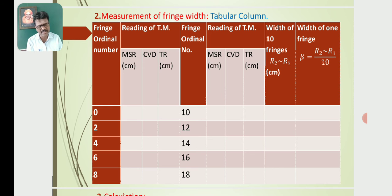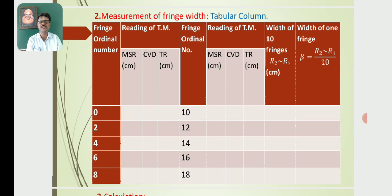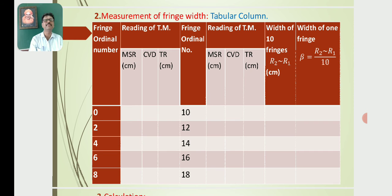In the tabular column, the first column is the fringe ordinal number — usually 0, 2, 4, 6, 8 — as readings are taken for even-numbered fringes. The next columns are the travelling microscope reading: MSR in centimetres, CVD (no unit), and the calculated total reading TR. Again, for fringes 10, 12, 14, 16, and 18, the travelling microscope readings (MSR and CVD) are noted and the total reading TR = MSR + CVD × LC is calculated and tabulated.